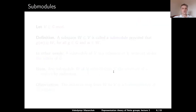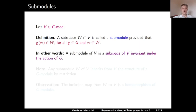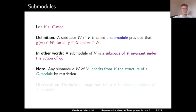Let us now talk about submodules. Let V be a G-module. A subspace of V is called a submodule, provided that it is stable under the action of G. In other words, for any g ∈ G and any w in the subspace, applying g to w produces an element in this subspace — that is, a submodule is a subspace invariant under the action of G. Note: any submodule of a module inherits from V the structure of a G-module by restriction.